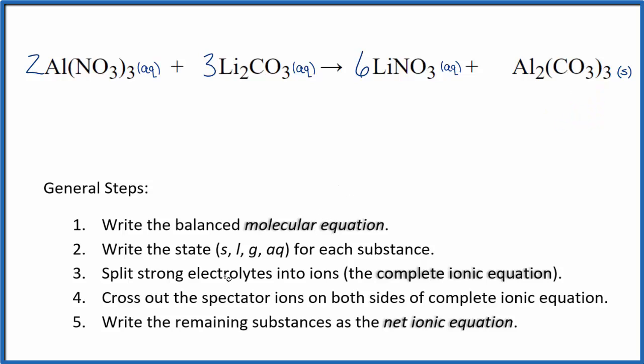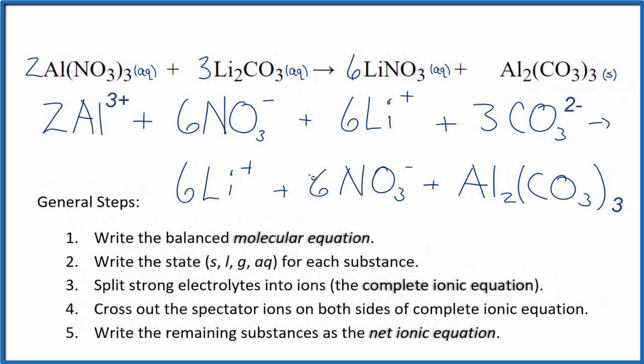Now we can split the strong electrolytes into their ions, and that's going to give us the complete ionic equation. Note that we don't split solids apart when we do net ionic equations, so we'll keep the aluminum carbonate together. So when we split apart the strong electrolytes, we get this. So this is the complete ionic equation.